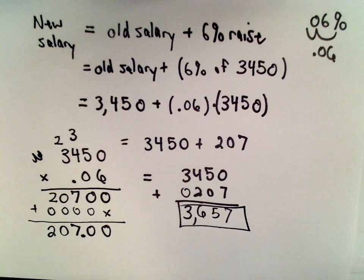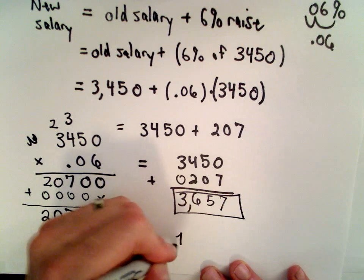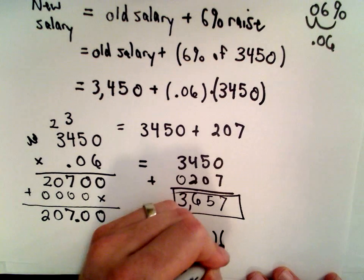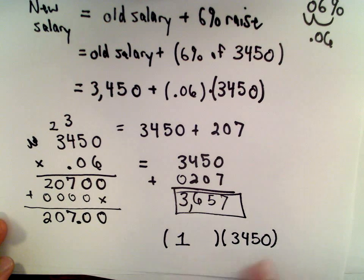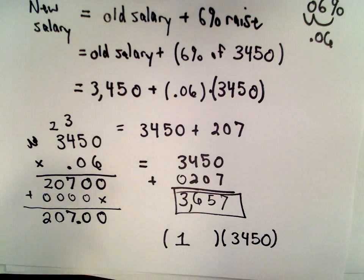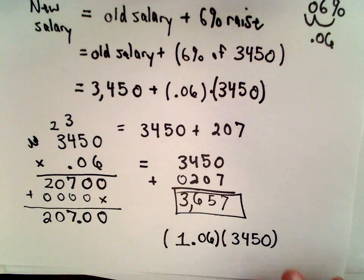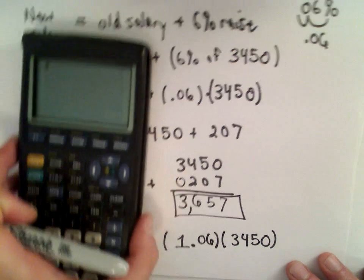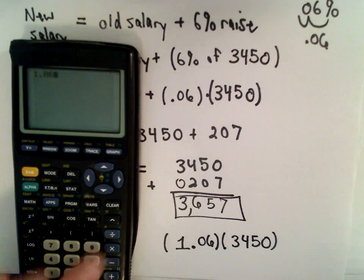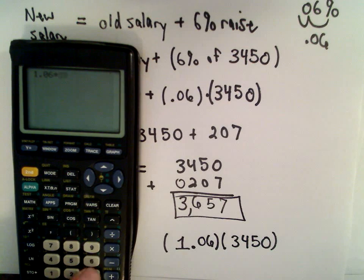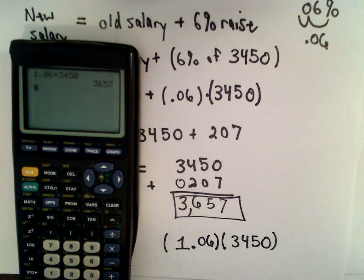Another way you could do this, if you were allowed to use your calculator on it - suppose I just multiplied her original salary by 1. If you multiply it by 1 it's not going to change at all. Her raise was 6%, which was .06. So a way to do this if you had a calculator is you could just multiply her old salary by 1.06. So 1.06 multiplied by 3450, I'm still getting $3,657.